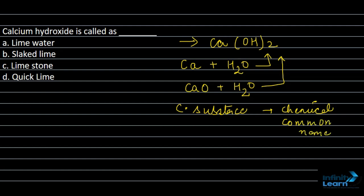Here in this question, let me tell you about these. Lime water is basically Ca(OH)₂. Slaked lime is again Ca(OH)₂. Limestone is CaCO₃, also called marble. And quick lime is CaO.